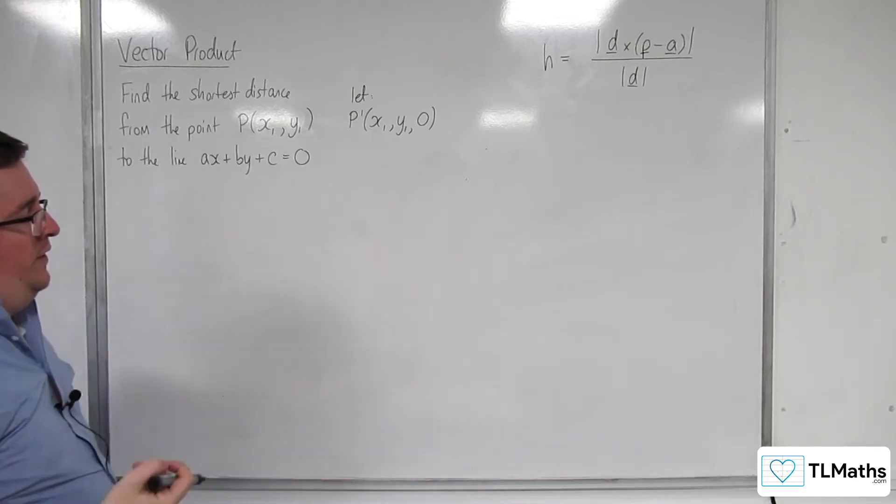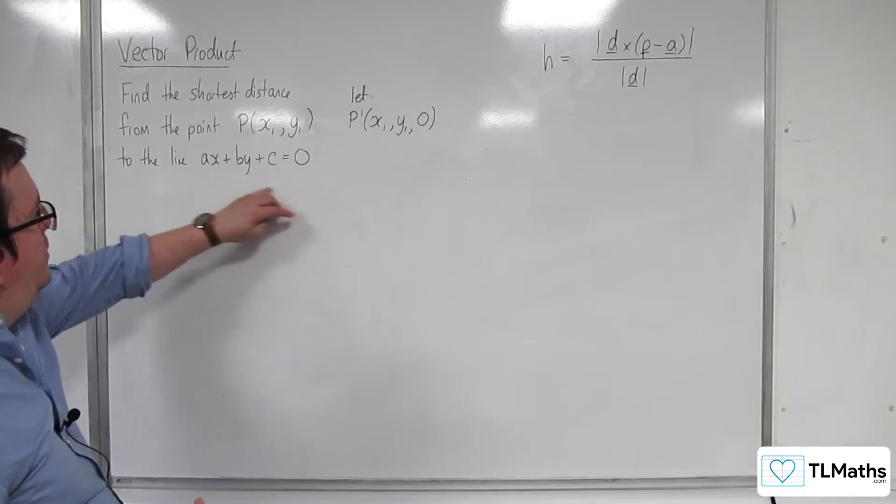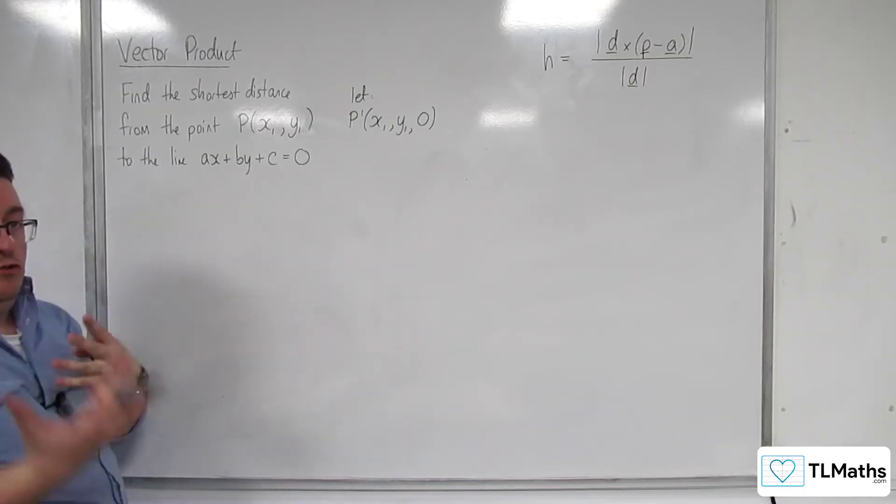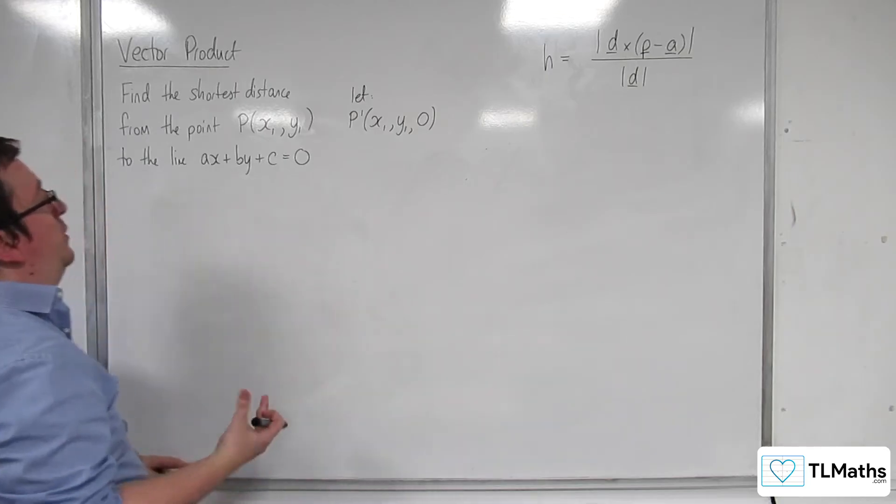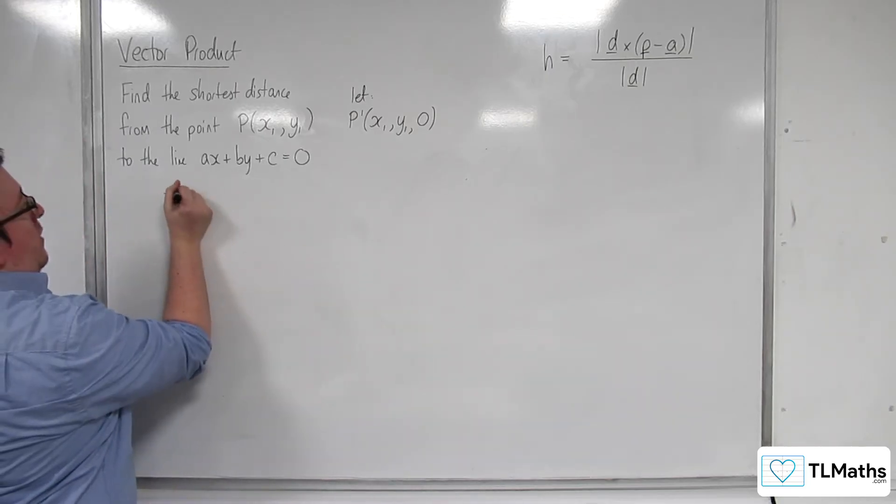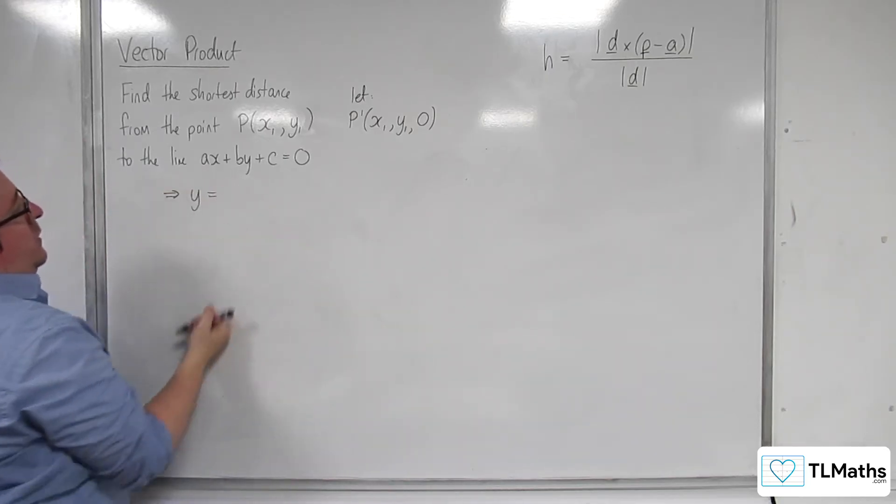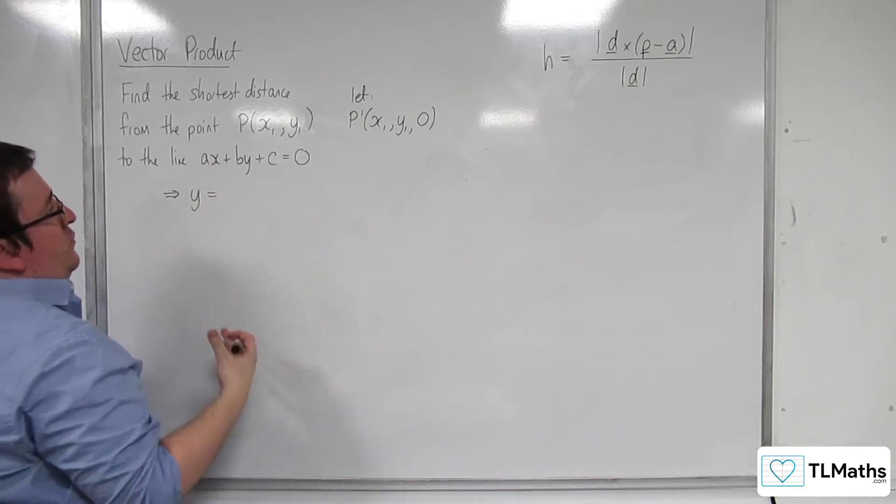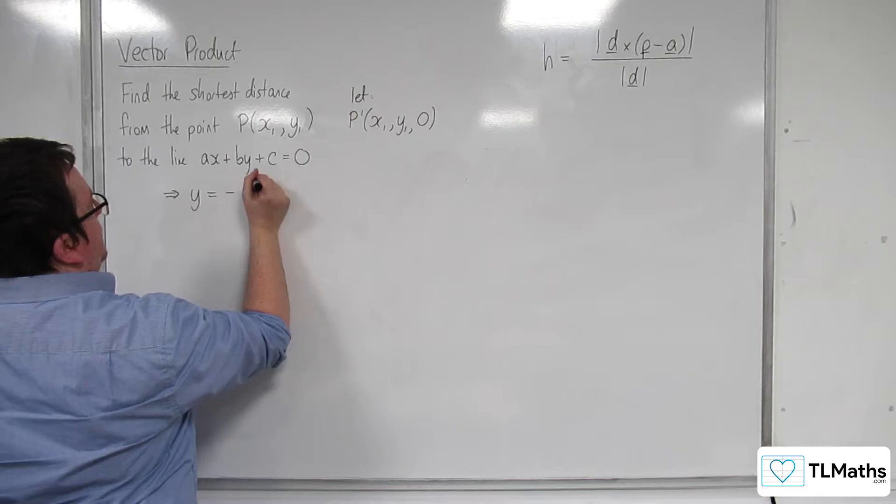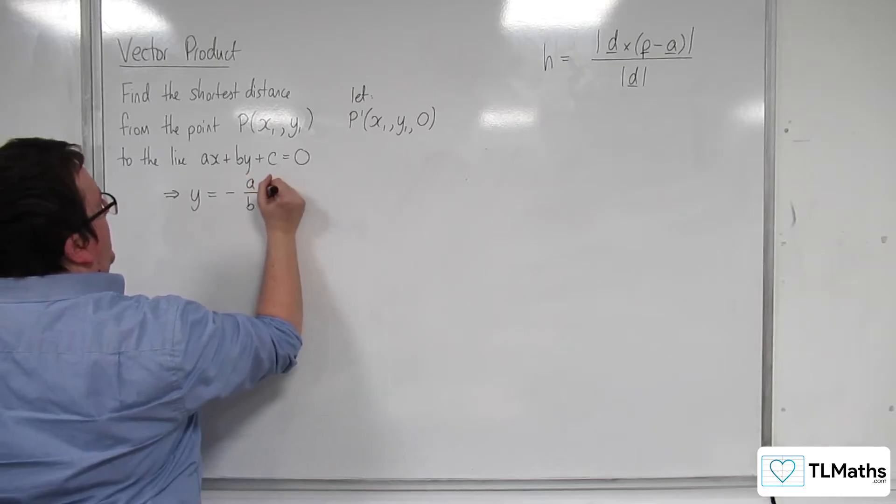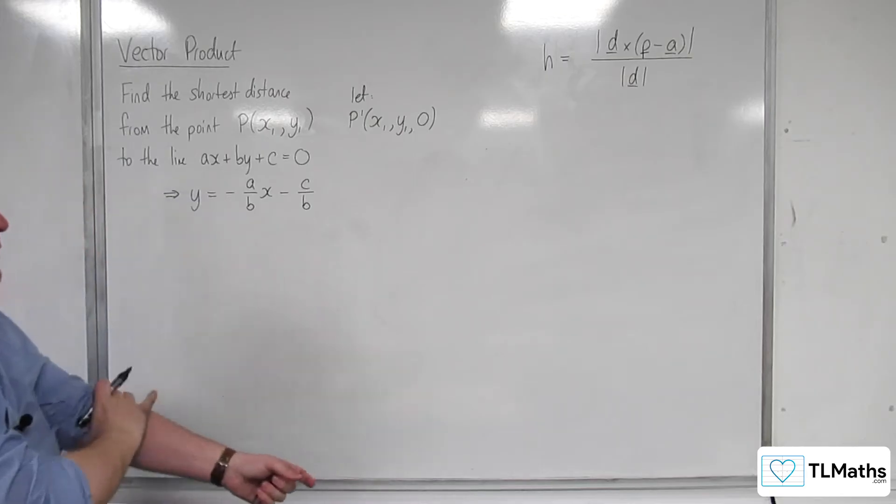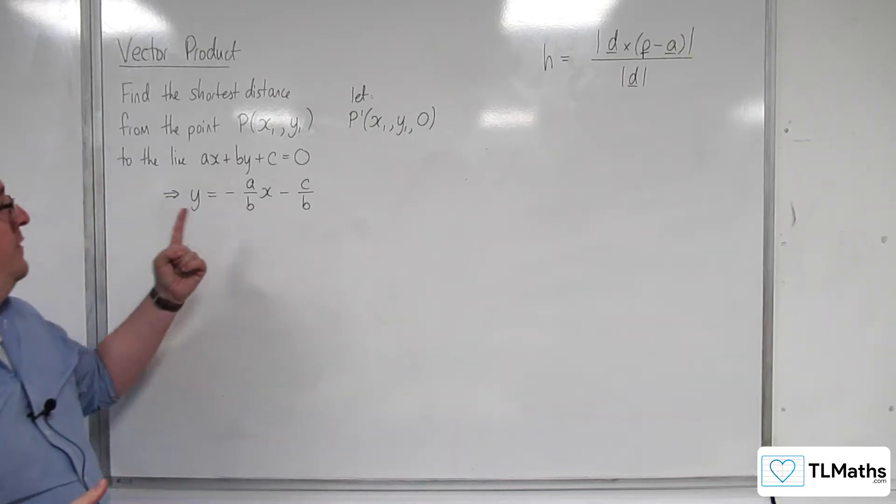So the next thing that I did was think about this equation of the line. I need a direction vector in some form, so I'm going to rearrange this to get y equals. I'm going to subtract ax and c from both sides, divide through by b. So, I'm going to get minus a over b x take away c over b. So we've now got the equation of the line here.